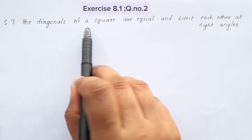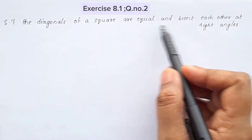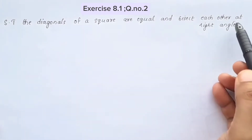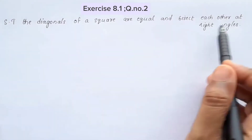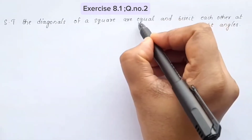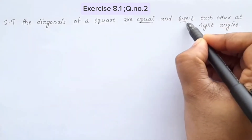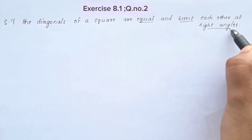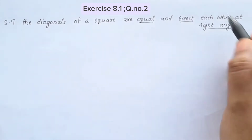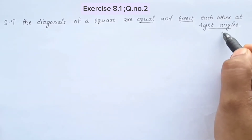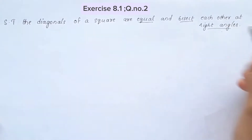Show that the diagonals of a square are equal and bisect each other at right angles. We will prove that the diagonals are equal and bisect each other at right angles.